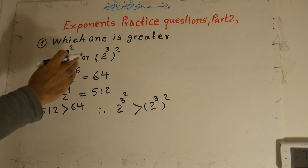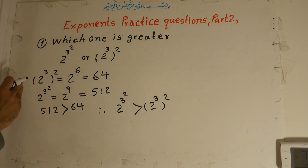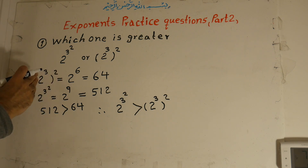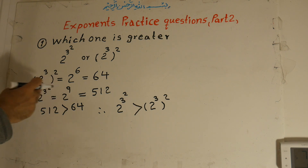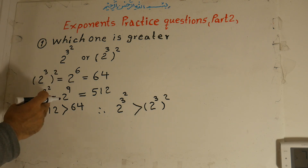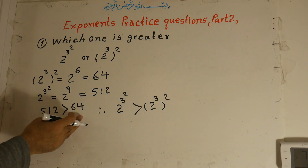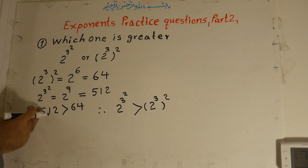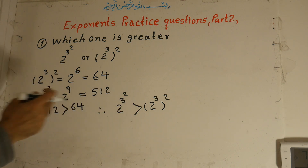I repeat: which one is greater — two to the power of three times three to the power of two, or two to the power of three all to the power of two? Two to the power of three all to the power of two equals two to the power of six, which is 64. And two to the power of three times three to the power of two gives three squared equals nine, so two to the power of nine equals 512. Therefore 512 is greater than 64, so two to the power of three to the power of two is greater than two to the power of three all to the power of two.